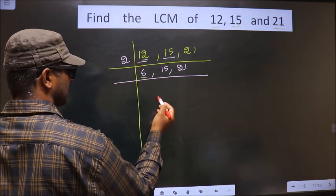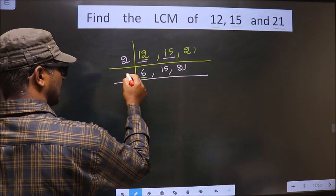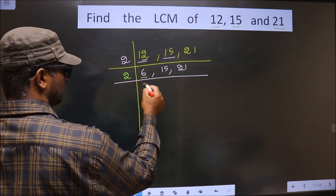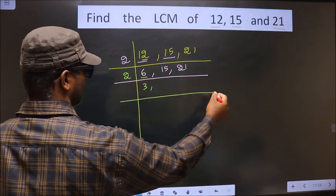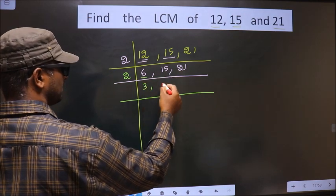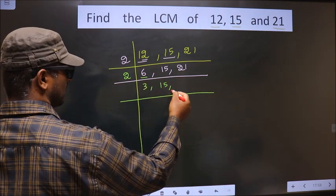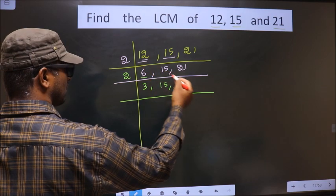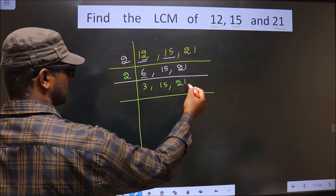Now here we have 6. 6 is an even number, so we take 2. 2, 3 is 6. Now 15 is not divisible by 2, so you write as it is down. 21 also not divisible by 2, so you write as it is down.